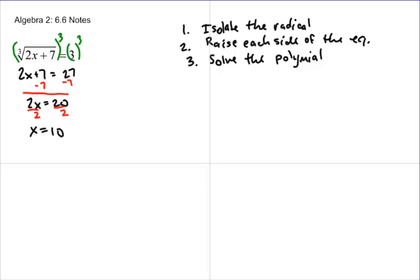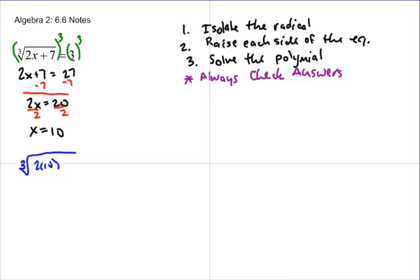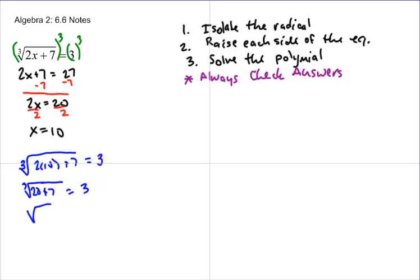That's really all you need to do to solve it. Now, the big deal when you're working with radicals is to always check your answers, because sometimes you'll get something that won't work. When we check this, we take the cube root of 2 times 10 plus 7, and that should equal 3. That gives us the cube root of 27, which is 3. ✓